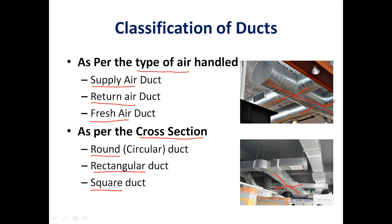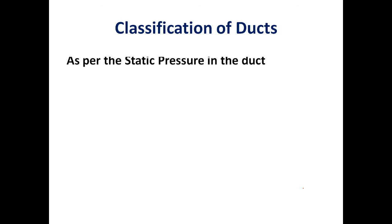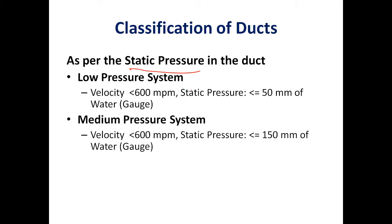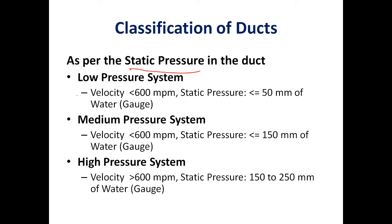The third classification is based on static pressure inside the duct. The system is divided into three classes: low pressure, medium pressure, and high pressure. In a low pressure duct system, the air velocity is limited to 600 meters per minute and the static pressure is up to 50 mm of water column.